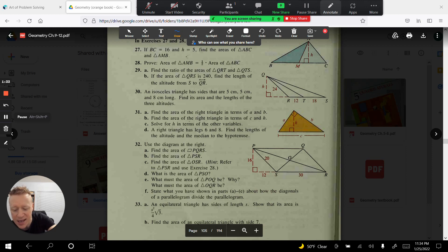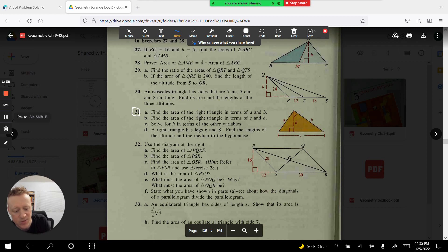It says find the area, problem 31, find the area of the right triangle in terms of A and B. So you have this right triangle here. Clearly the right angle is at the top and so A and B are its legs and you could say it's half A times B.